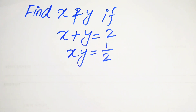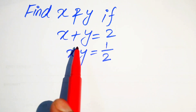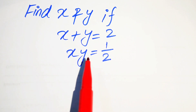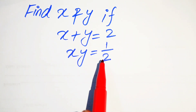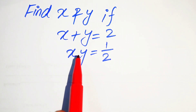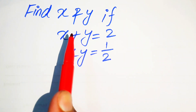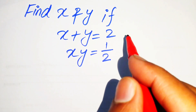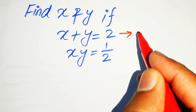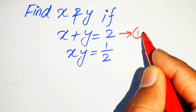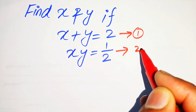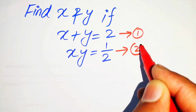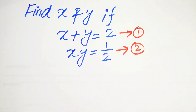Hello everyone, welcome. We have a nice algebra problem: x plus y equals 2, which we call equation number 1, and x times y equals 1 over 2, which we call equation number 2. We need to find the values of x and y.